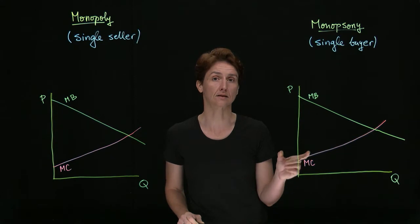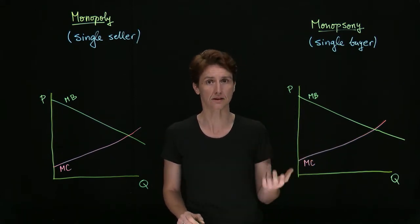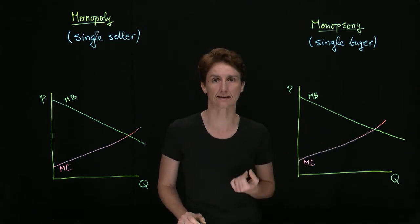In a monopsony there's a single buyer, then we will assume that there are many sellers, meaning competition on the supply side.